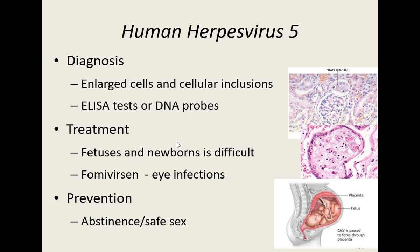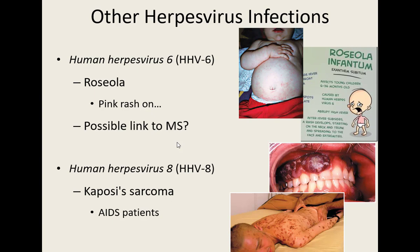Other herpesviruses: HHV-6 and HHV-8. HHV-7 is not discussed much because we don't know a lot about it — we know it behaves like HHV-6 but not much more. HHV-6 causes a pink rash on the trunk of the body and is very common in infants. This disease is called roseola — the 'rose' for pink roses. There's also a possible link being researched between HHV-6 and multiple sclerosis — most people with MS have also had this virus.